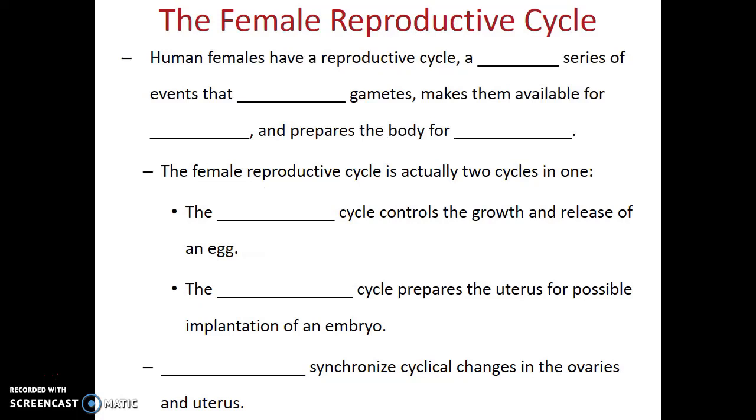Human females have a reproductive cycle, a recurring series of events that has three very specific functions. One, it produces gametes. Next, it makes those gametes available for fertilization. And lastly, it prepares the female's body for a possible pregnancy.